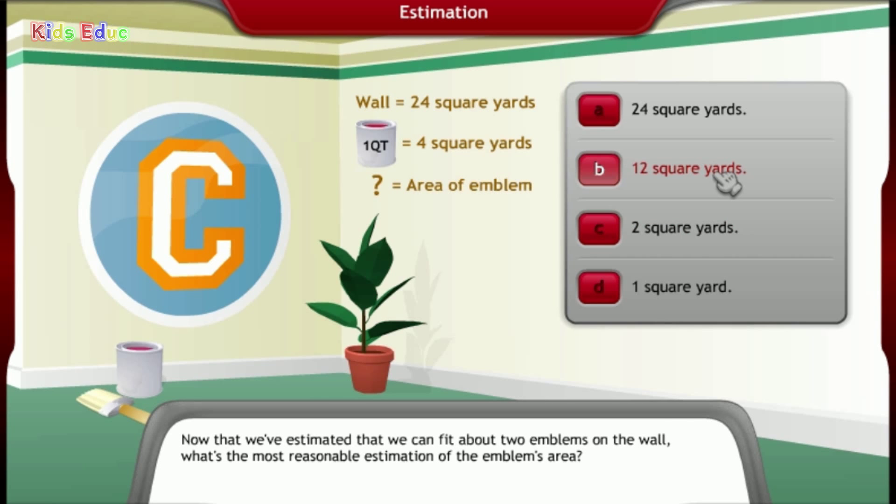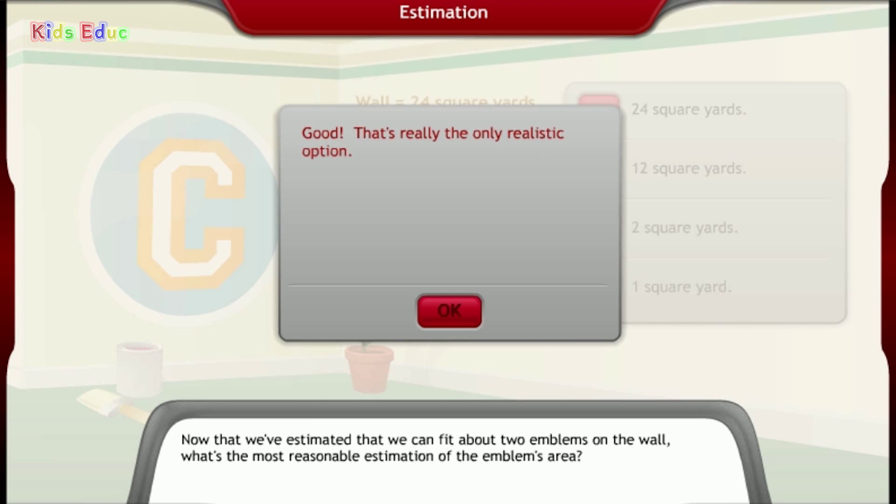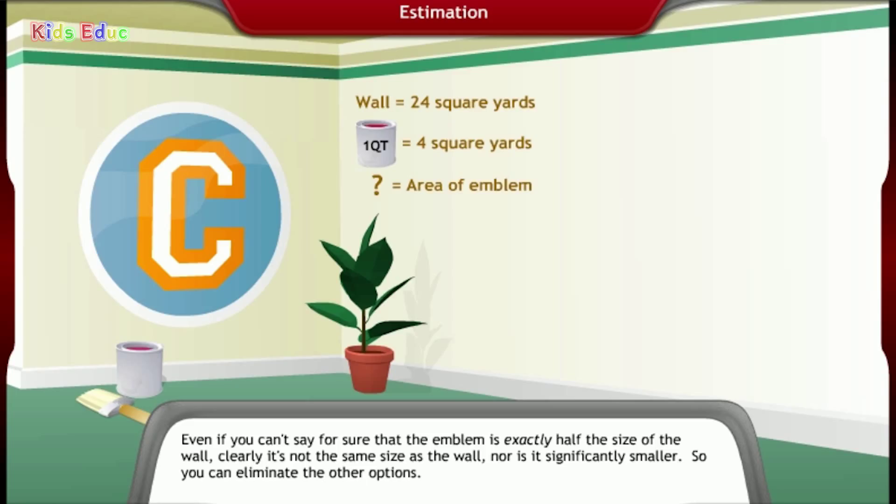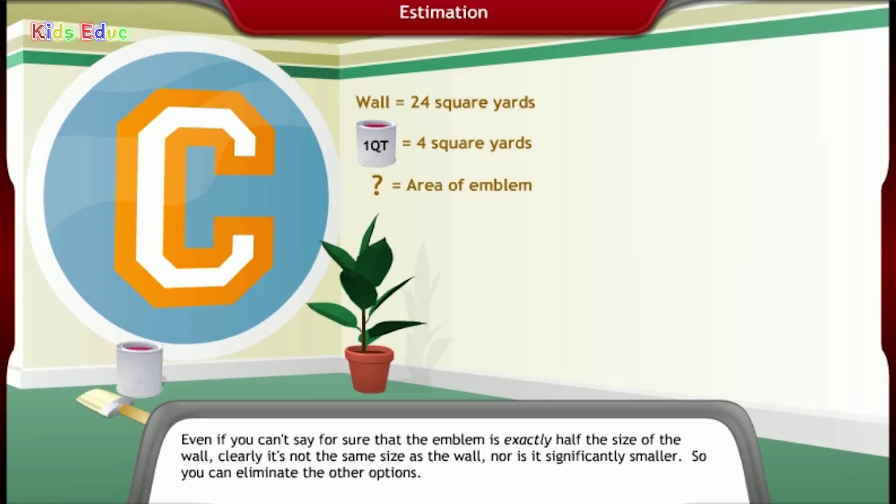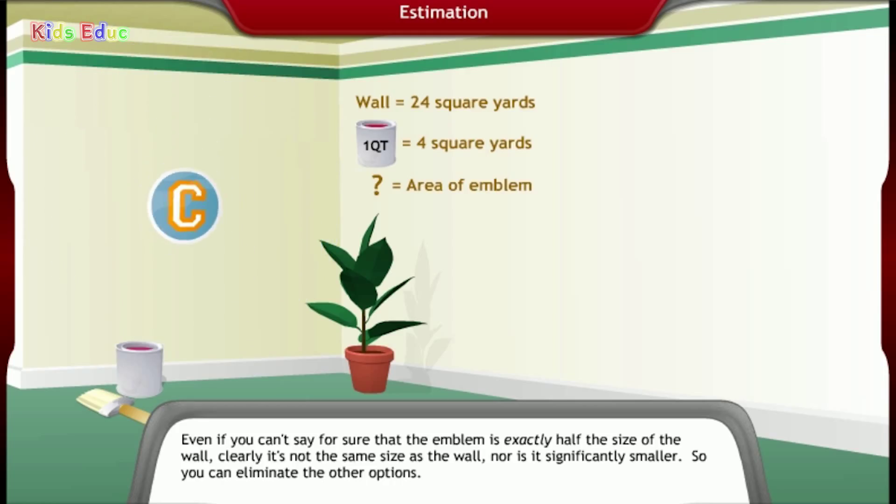12 square yards. Good. Even if you can't say for sure that the emblem is exactly half the size of the wall, clearly it's not the same size as the wall, nor is it significantly smaller. So you can eliminate the other options.